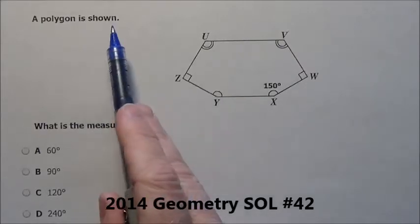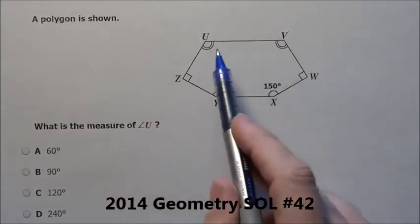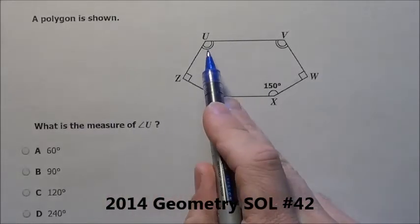Here's problem 42. A polygon is shown and it tells us it wants to know the measurement of U.